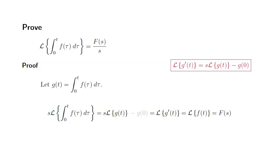By dividing both sides of the equation by s, we have the desired result. Laplace Transform of the integral from 0 to t, f of tau with respect to tau is equal to capital F of s over s. That's it. I hope that this was clear.